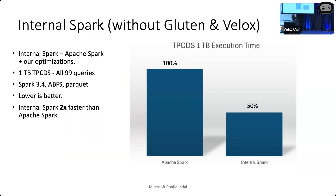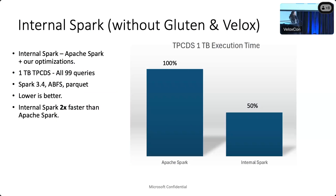Throughout this presentation, we refer to our Spark offering as internal Spark. Internal Spark is Apache Spark plus our QoQE optimizations. We have published multiple papers and blog posts about it. On one TB TPC-DS, all 99 queries for Spark 3.4, we are two times faster than Apache Spark.